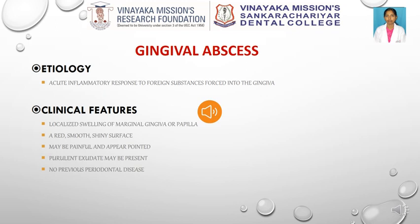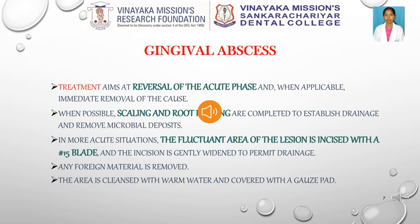The clinical features of gingival abscess include a red, smooth, sometimes painful, often fluctuant swelling which is confined within the gingival tissue. The main objective is to remove the cause, which can be achieved by scaling and root planing. Scaling and root planing can remove the microbial deposits and also helps in drainage of pus. In more acute situations, the lesion is incised at the most fluctuant area using a number 15 scalpel blade. The incision is gently widened to permit drainage of pus. The area is irrigated and flushed out with saline. Antibiotics and analgesics can be prescribed if necessary.